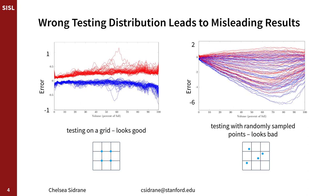However, this does leave us with a new problem. Neural networks are black boxes without strong theoretical guarantees. You can use testing, but here are some plots that have come from an error we made while working on this project — it demonstrates how testing can be unreliable. We accidentally trained a fuel gauge model on regular grid points and then evaluated that model on those same regular grid points. The results are shown in the plot on the left. The error was pretty low, but then we realized our mistake and evaluated the model on randomly sampled points, as shown on the right, and the error was much worse, which meant that the model had overfit to the regular grid points, but we didn't know it had overfit when we used the wrong testing distribution.